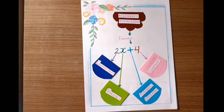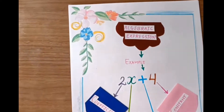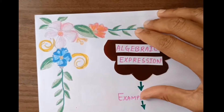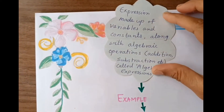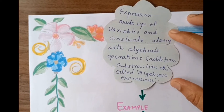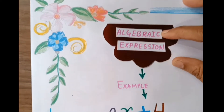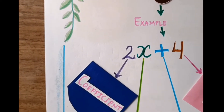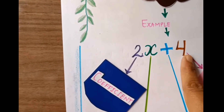Next one is algebraic expression. Here algebraic expression. Here it's information. Here is example. 2x plus 4.